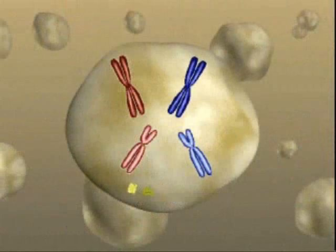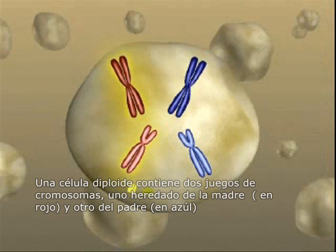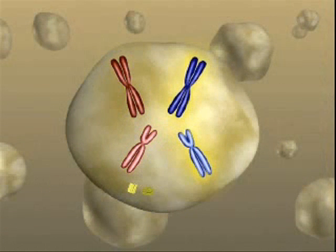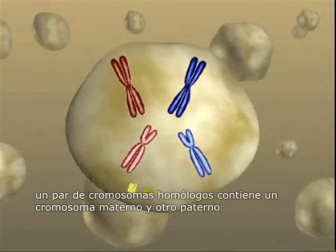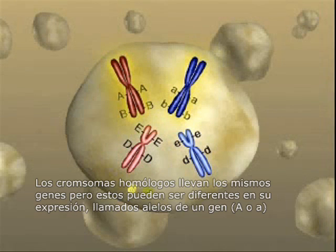A diploid cell contains two sets of chromosomes. The maternal set was contributed by the mother, and the paternal set was contributed by the father. A pair of homologous chromosomes consists of one maternal and one paternal chromosome.